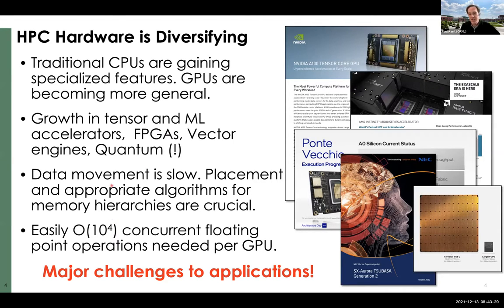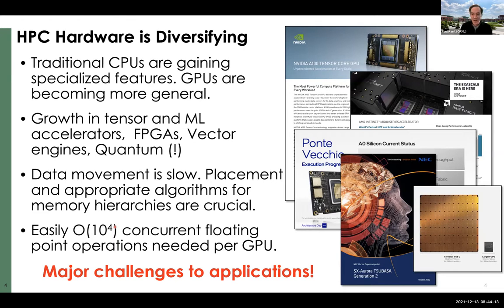If we think about the key features of most of these architectures, first and foremost, data movement is one of the slowest things we can do. Choosing appropriately where our data is and having the right algorithms for the memory hierarchies is very important. We also mustn't forget the scale of even the current hardware — accelerators can have thousands of compute elements, requiring something like 10,000 floating point operations at once, meaning we might need on the order of a million floating point operations in flight to run at high efficiency.